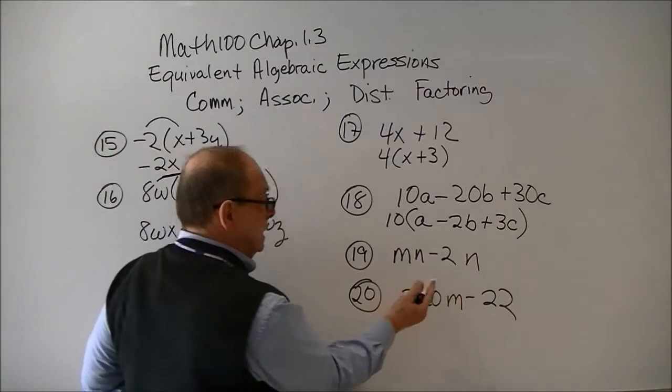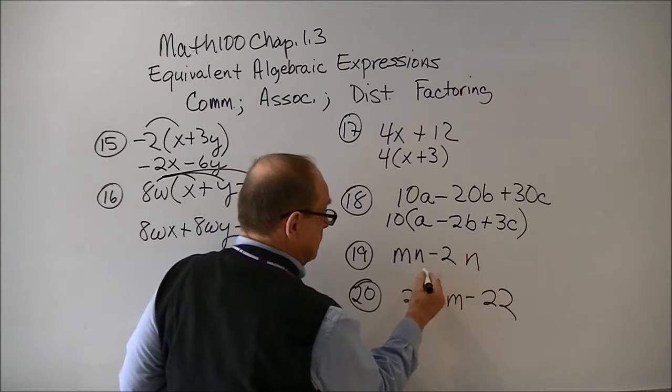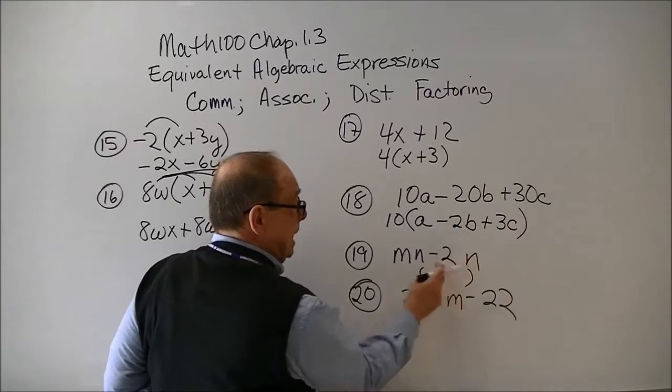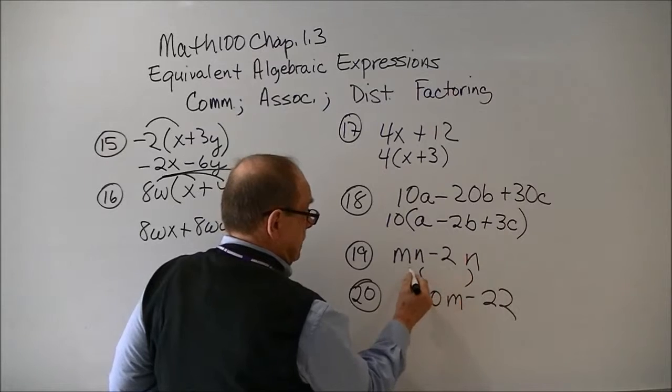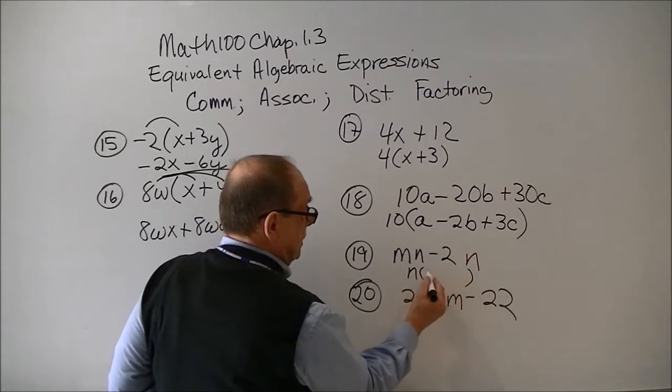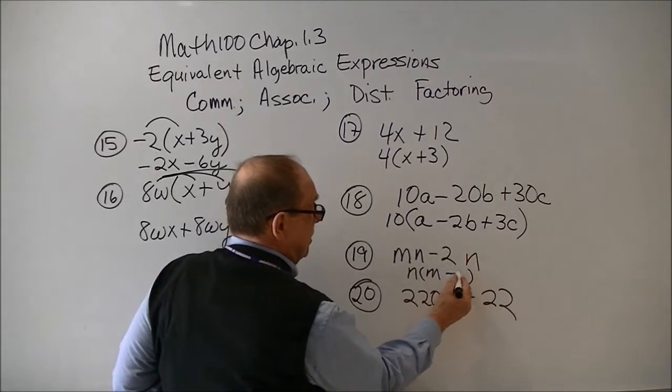Number 19, as you look at both terms, you want to factor out the common n. So you're left here with an m minus 2.